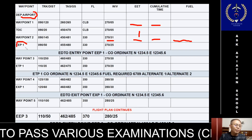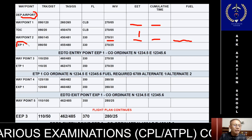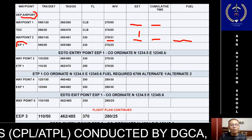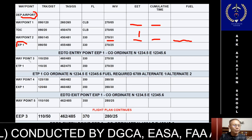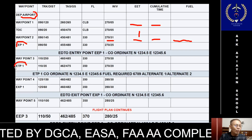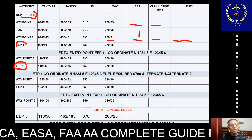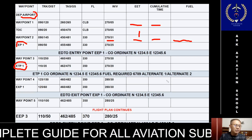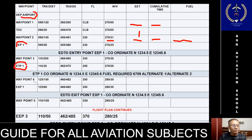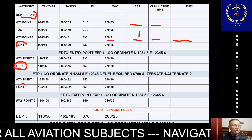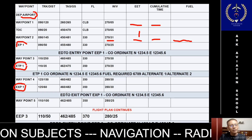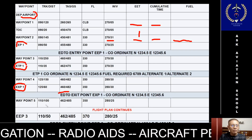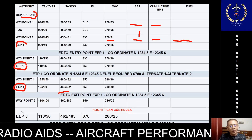The flight plan then shows the EDTO Entry Point one (EEP1) with its coordinates. Further along is equitime point one between the departure airport and the first possible alternate, with coordinates provided. Continuing on, there is waypoint four, then the EDTO Exit Point one with its coordinates. The flight plan continues in this way until the end of the flight.